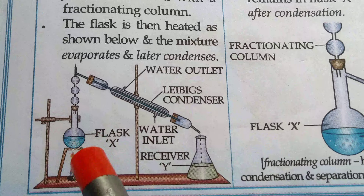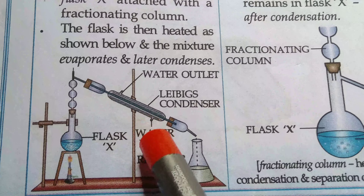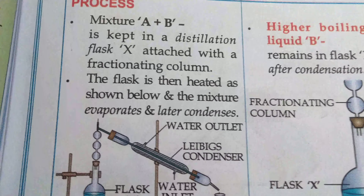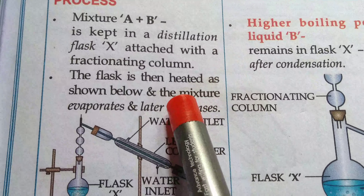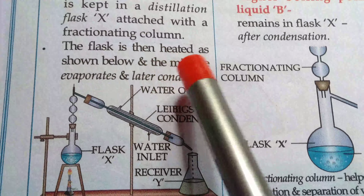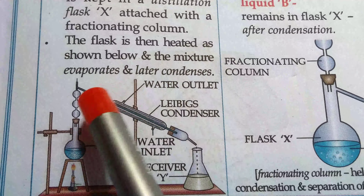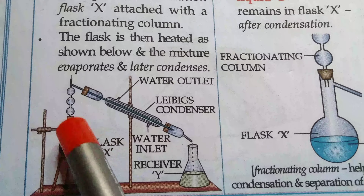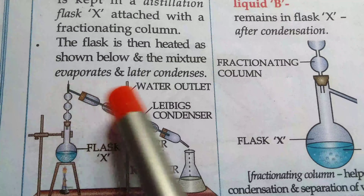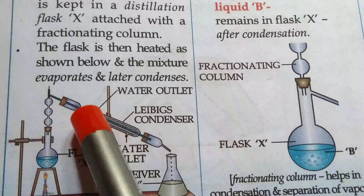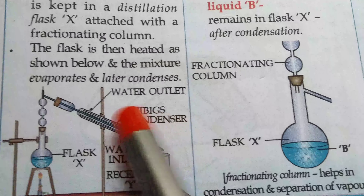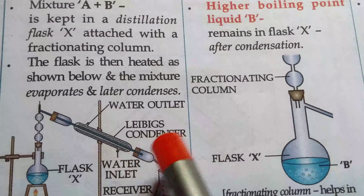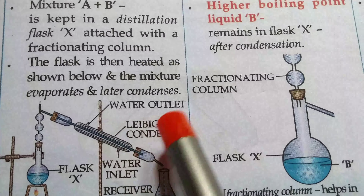Look at the figure — it looks like a distillation process setup with a long round bottom conical flask. The flask is then heated, the mixture evaporates and later condenses. This condenser is also known as Liebig's condenser. Students, be careful about the name of the condenser — you need to remember the name: Liebig's condenser.